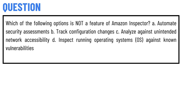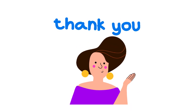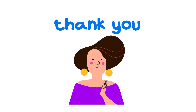Option D: inspect running operating systems against known vulnerabilities. The correct answer is Option B — track configuration changes. This option was not found in the AWS service PDF description, so that is the correct answer.